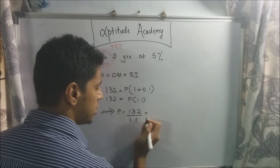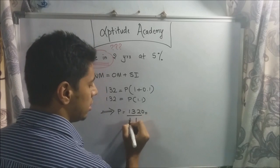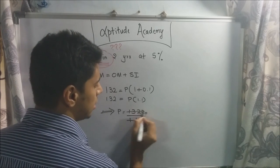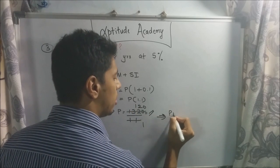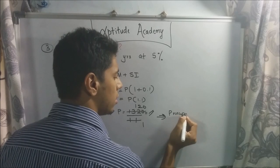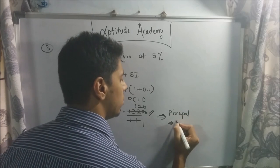Now, if you do this easily, you can remove this point. You can add a 0 here. 11 ones are. This will be 120. It implies your principal amount was equal to 120 rupees.